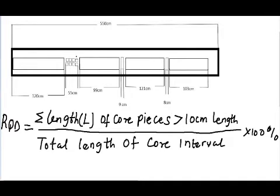So we're going to sum up all the core pieces that are greater than 10 cm. Starting from the left hand side, we have a core piece of 120 cm. So let's write it down. Next we have a core piece of 55 cm, which is greater than 10 cm. So let's write it down. Next we have a core piece of 99 cm.